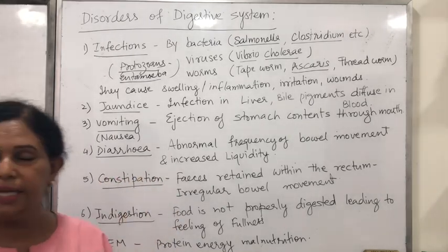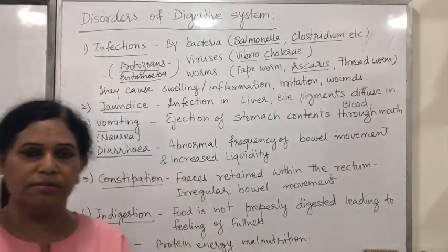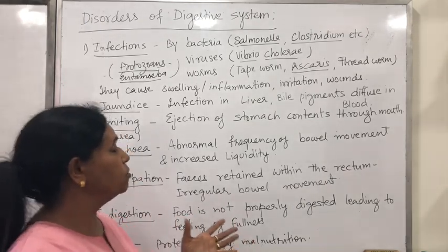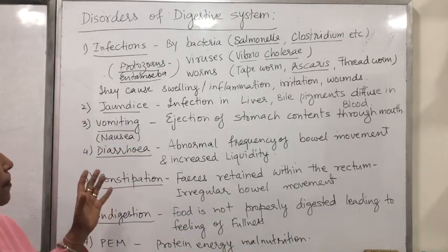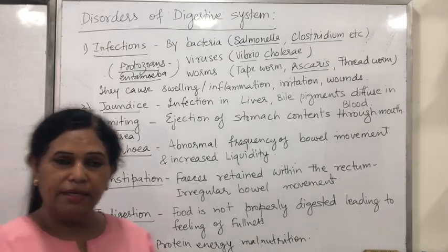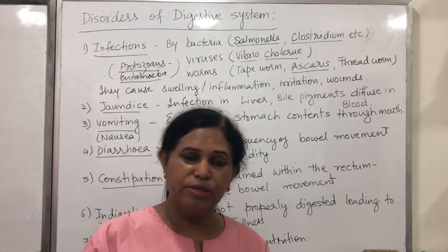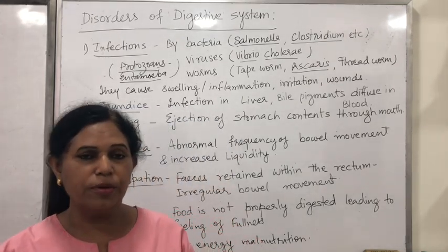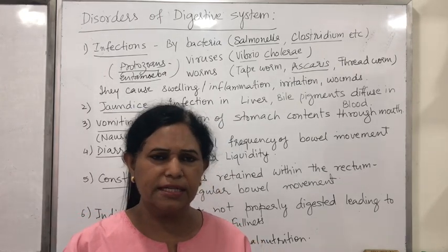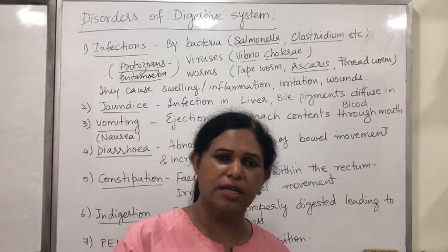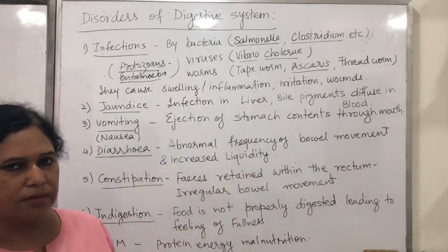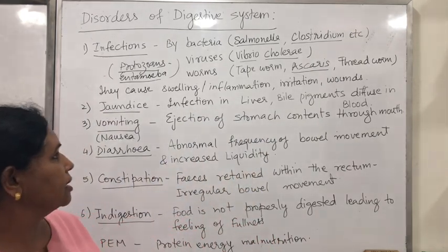Then there are worms like tapeworm, Taenia solium, Ascaris, and Trichuris. There are also thread worms and pinworms — so many worms. They live in the elementary canal, absorbing your digested food, and in turn release toxic material into your elementary canal, causing swelling and wounds.